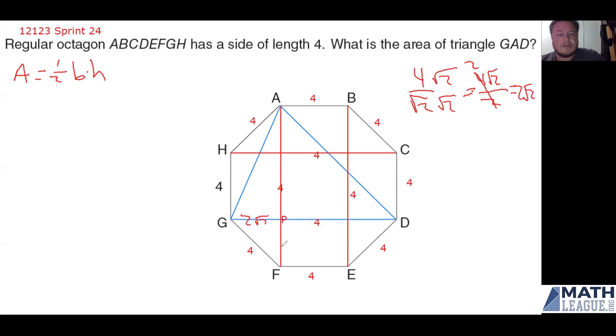So let me go ahead and draw that in where I need it. I could write the 2 root 2 in for every single one of these short legs, but I don't need to do that because at this point, I can kind of see where I'm going. I know that I'm going to need a length for GD, so I fill in the missing pieces there. I know I'm going to need a height from A down to P, so I filled in the one missing piece here. And at this point, we're ready. We have the base. We have the height.